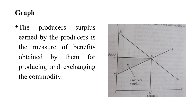The producer surplus earned by the producer is a measure of benefits obtained by them for producing and exchanging the commodity. On the OX-axis there is quantity and on the OY-axis there is price. OP is the price which the producer actually receives after selling the OQ quantity, but what he expects on the market is OS.